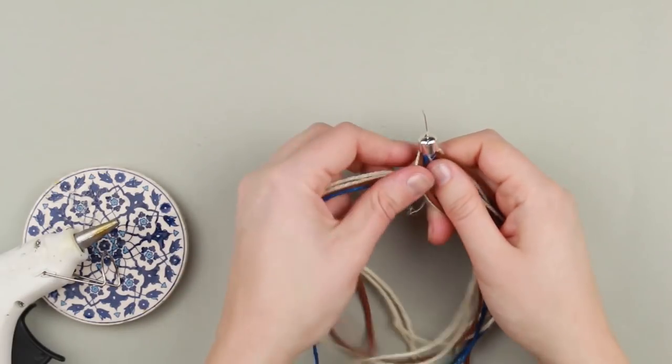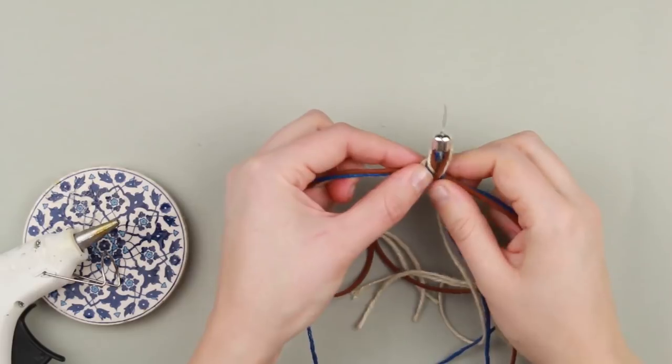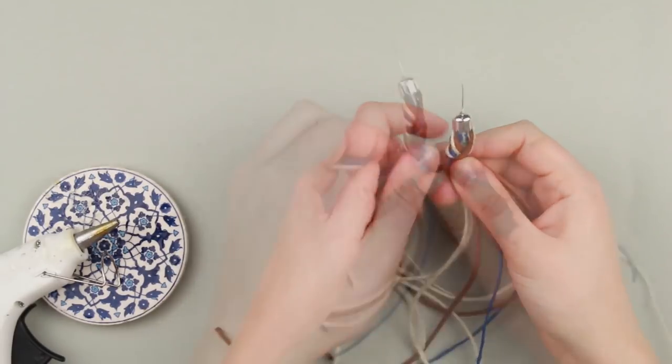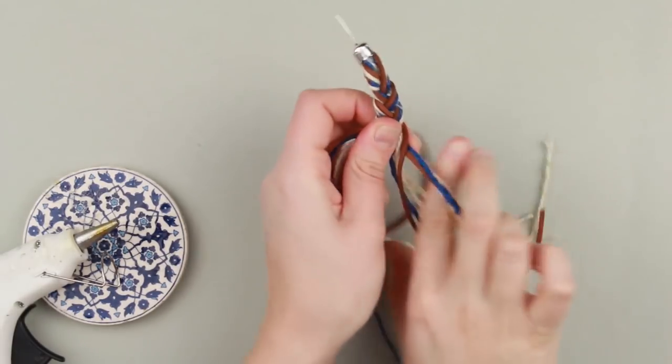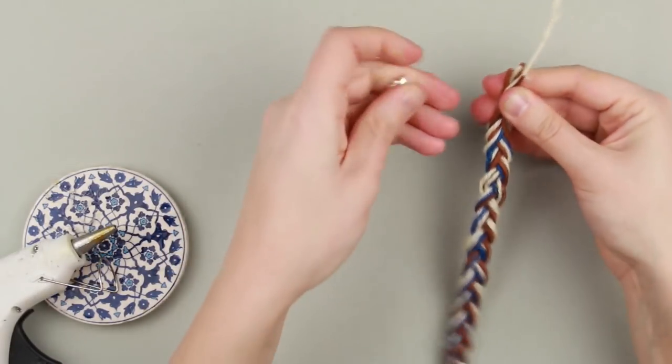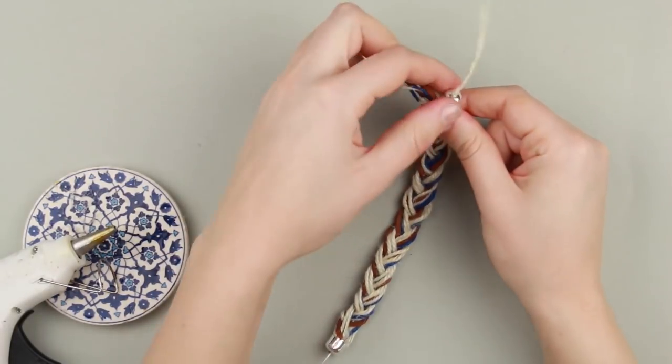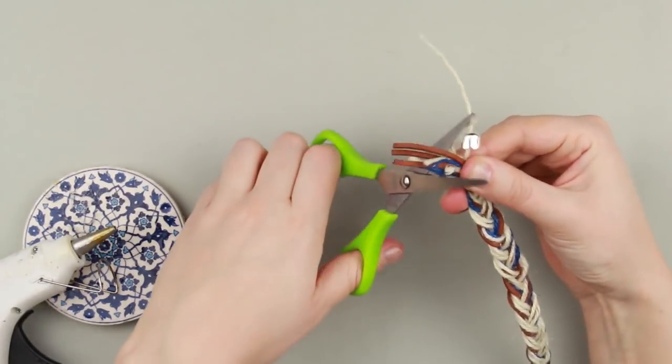Braid tight. Put the longest rope into the cap. Cut off the excess.